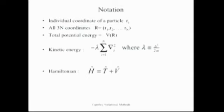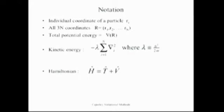Here's my notation. We have a potential energy V of R, where R refers to the three-N coordinates of the electrons, R1 up to RN. That's going to be our state space, and this is the Hamiltonian. As already discussed, you have a kinetic energy operator, which is del squared — non-relativistic — and then a potential energy operator for the electron-electron interaction and electron-nuclear interaction.